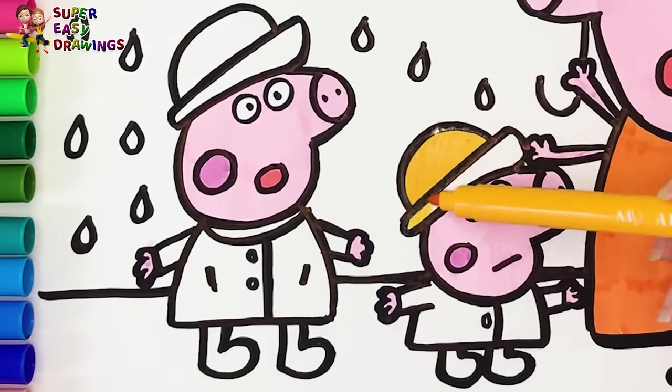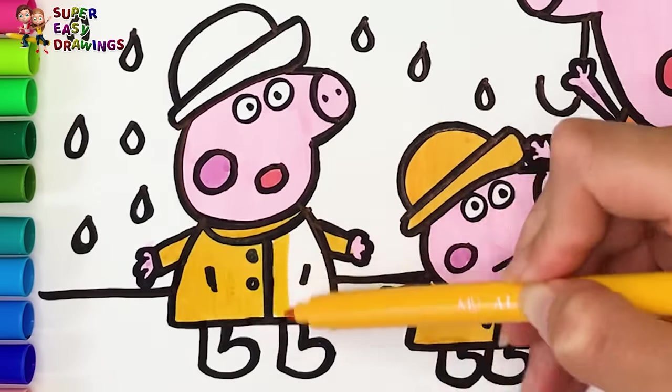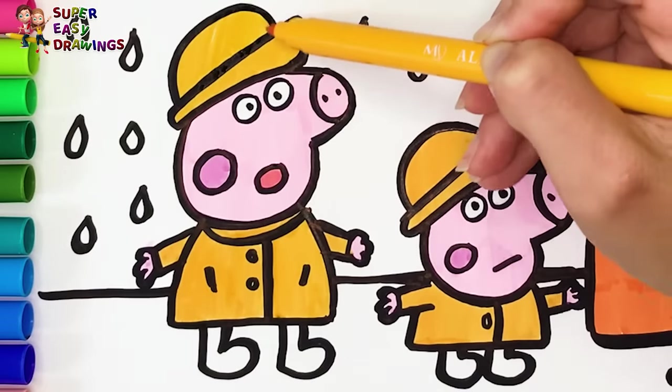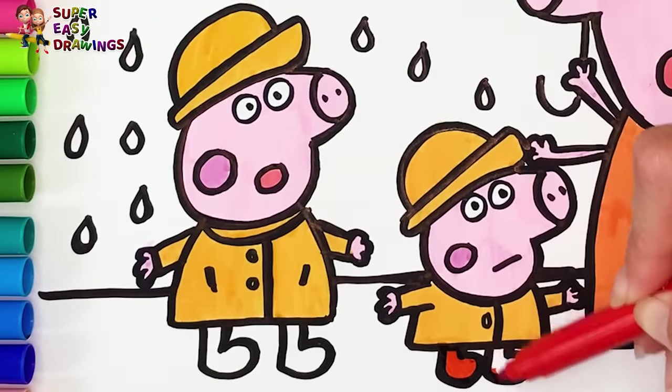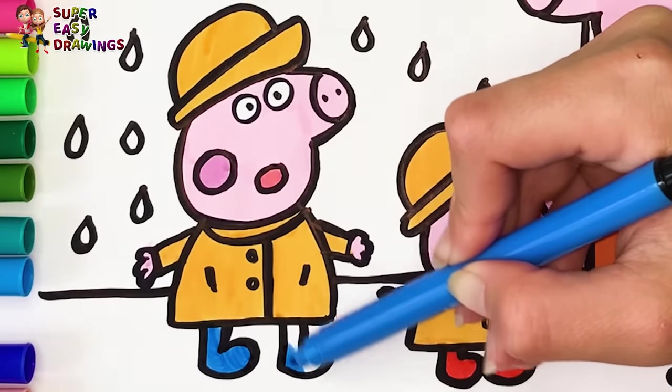Then I color Peppa's and George's raincoats and hats with this vivid yellow color. I color George Pig's boots red. I use blue for Peppa Pig's boots.